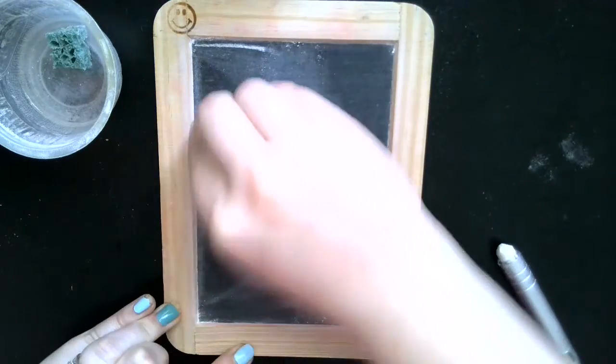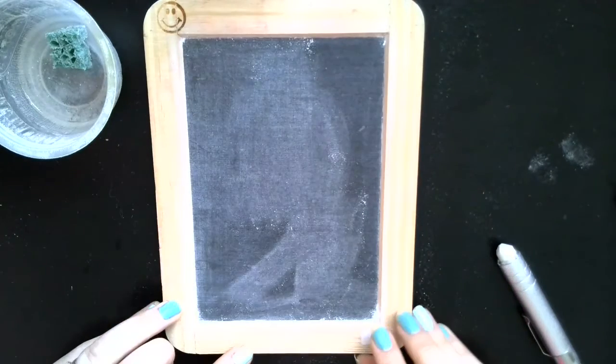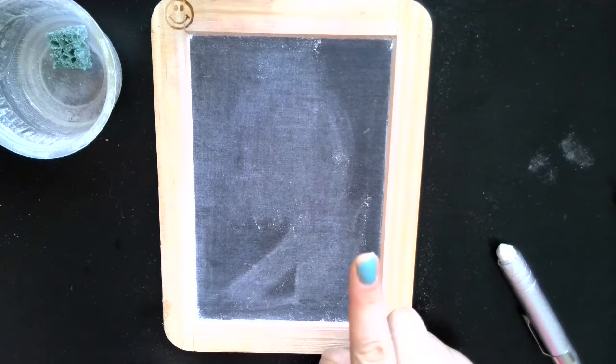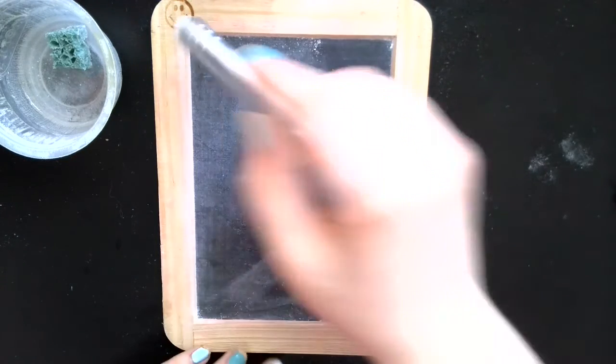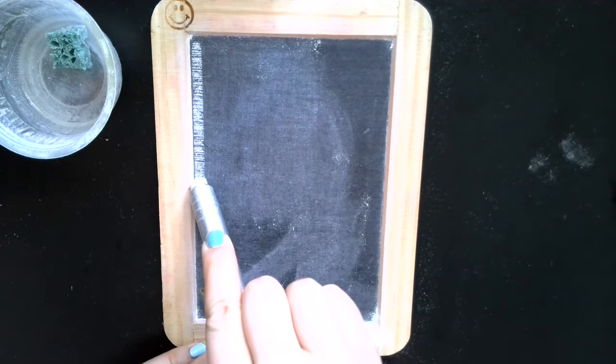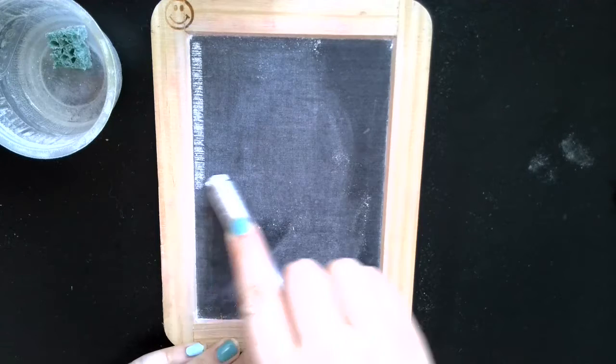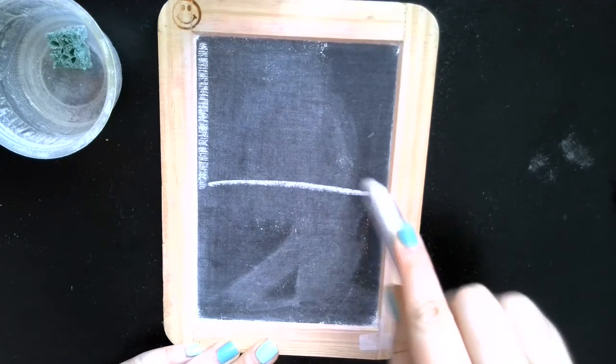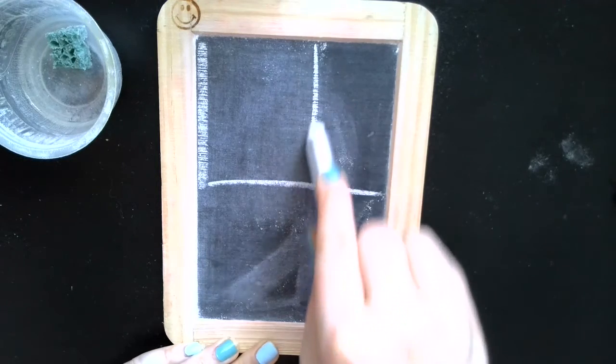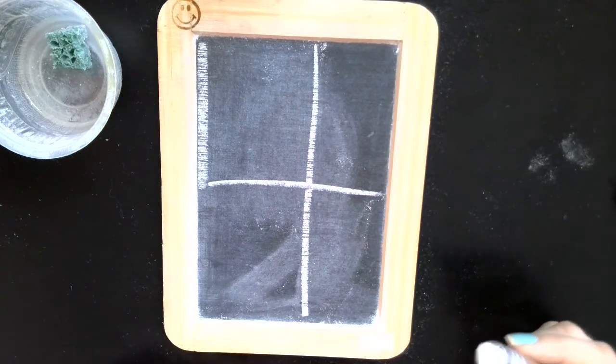The next number we're gonna draw is the number four. Now the number four uses two small lines and one big line. Let's start at our happy face. Number four comes small line to the middle and small line across. Then we're going to jump to the middle here and we're going to do a big line down. So four is a little bit tricky.